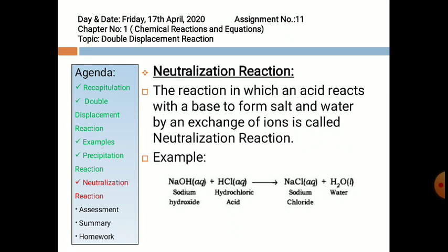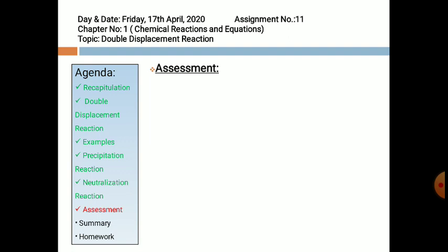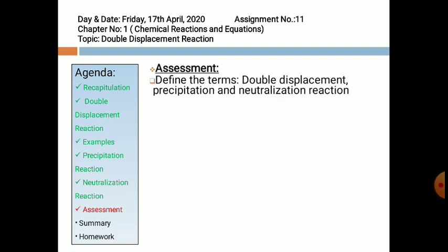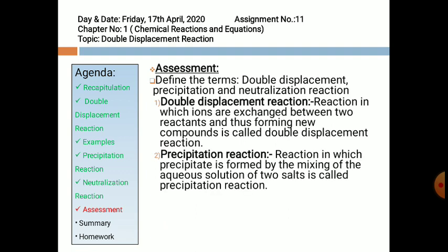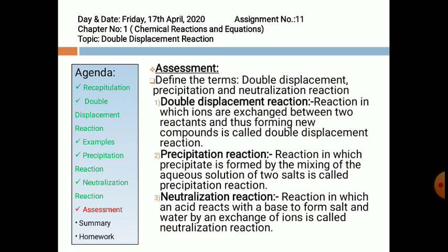Now for today's assessment, your first question: define the terms double displacement reaction, precipitation reaction, and neutralization reaction. Double displacement reaction: a reaction in which ions are exchanged between two reactants, thus forming new compounds, is called double displacement reaction. Precipitation reaction: a reaction in which a precipitate is formed by mixing aqueous solutions of two salts is called precipitation reaction. Neutralization reaction: a reaction in which an acid reacts with a base to form salt and water by exchange of ions is called neutralization reaction.